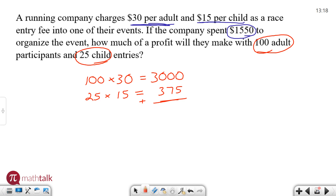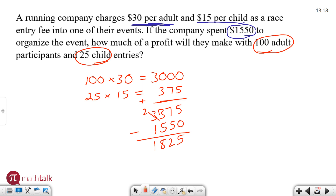Now that I know how much was brought in from each group of participants, I'm going to go ahead and add those up. I get $3,375 — that's how much I brought in. Now let's subtract off how much we spent, which is $1,550. So after the subtraction, I get $1,825. It's always good to use a calculator if you don't want to do the math by hand. But this is how much money was profited — $1,825. That's a good profit for a race.